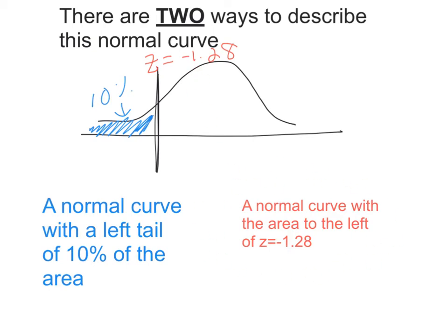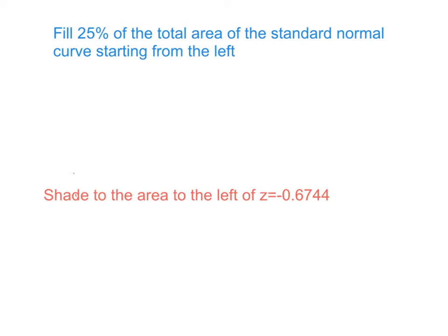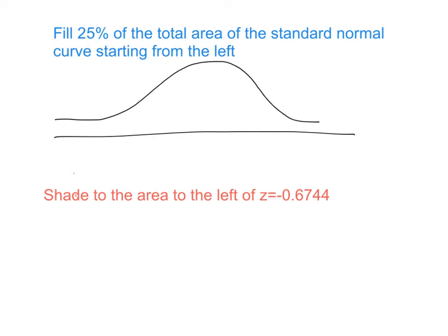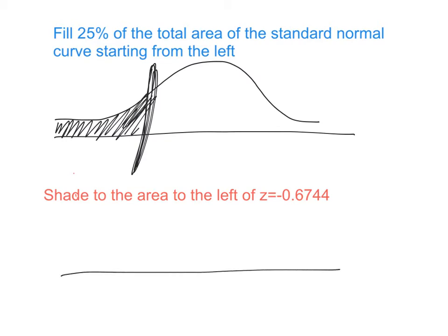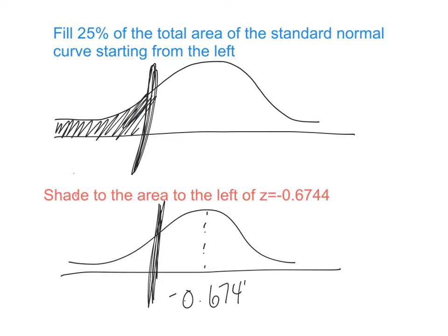We can see this both ways. If the directions say to fill 25% of the total area of the standard normal curve starting from the left, I draw the normal curve and shade in approximately 25% of the area. The other version of the same question says: shade the area to the left of z = −0.6744. So I place that border on the standard normal curve and shade the area to its left.